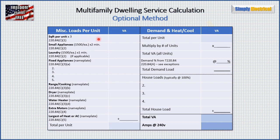We're going to start in the left-hand column. We take the square footage of each unit times three to get a VA value. Then we take the small appliance loads, laundry loads if they apply, and fixed appliances with their nameplate ratings. We take our range or cooking at its nameplate, our dryer at nameplate, water heater at nameplate, and any extra motors at their nameplate. Then we take the largest of the heating or cooling at its nameplate. We tally all these up to get our total per unit VA, then multiply by our number of units to get total building VA. Then we go to table 220.84 and get a demand factor, apply that to get our total demand load.